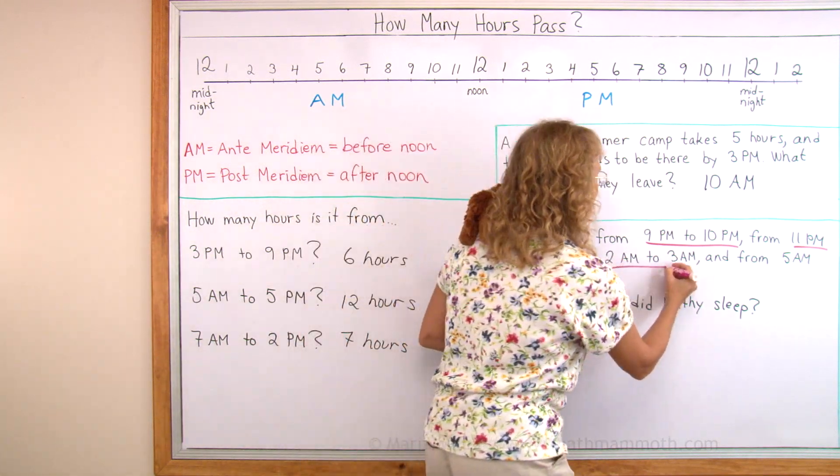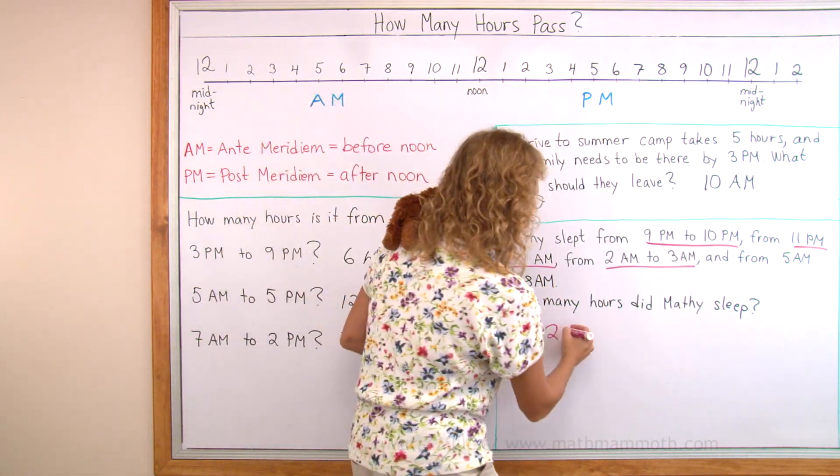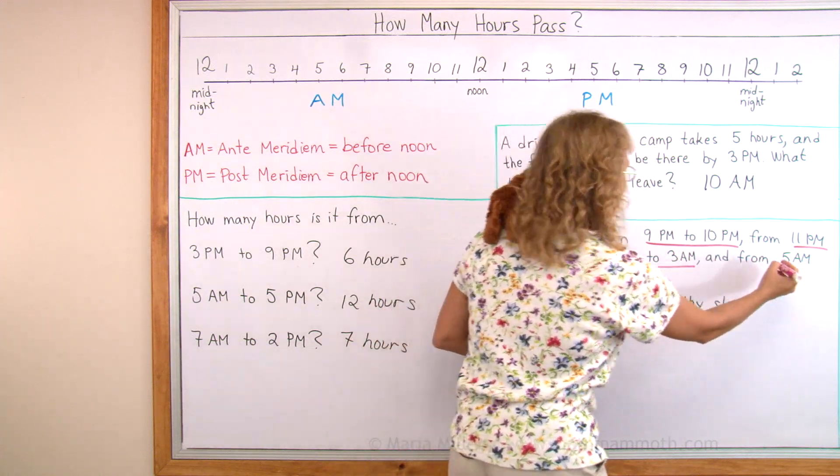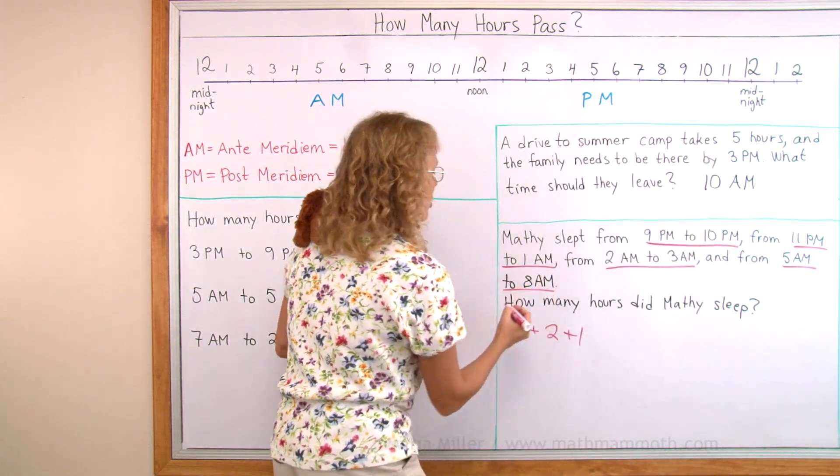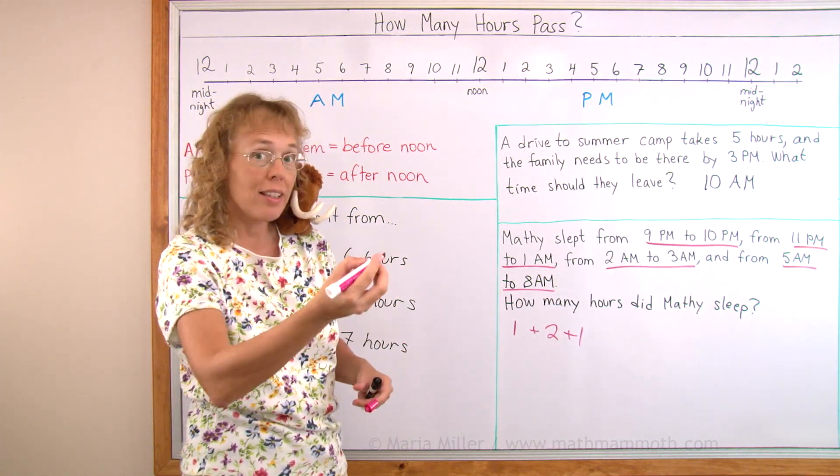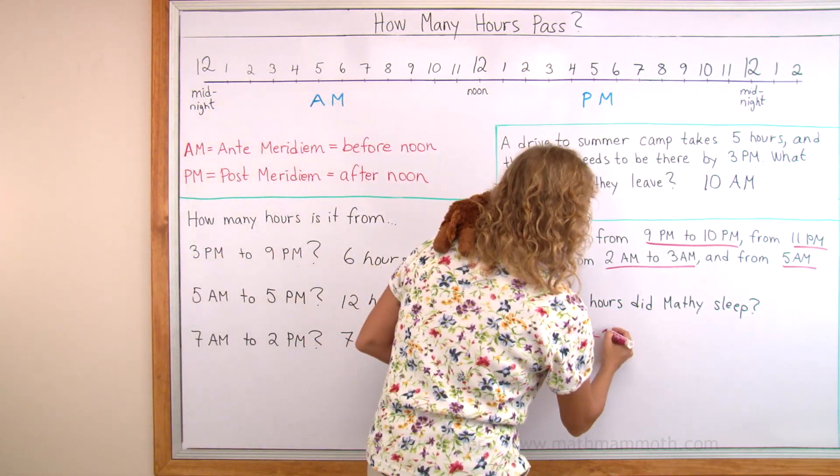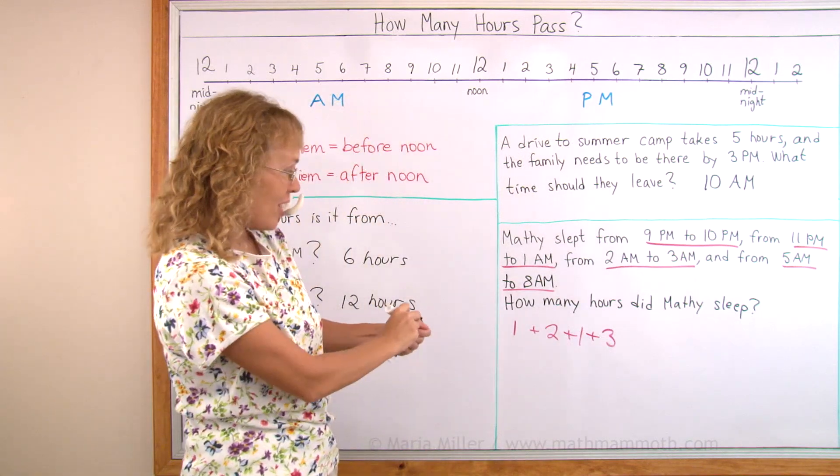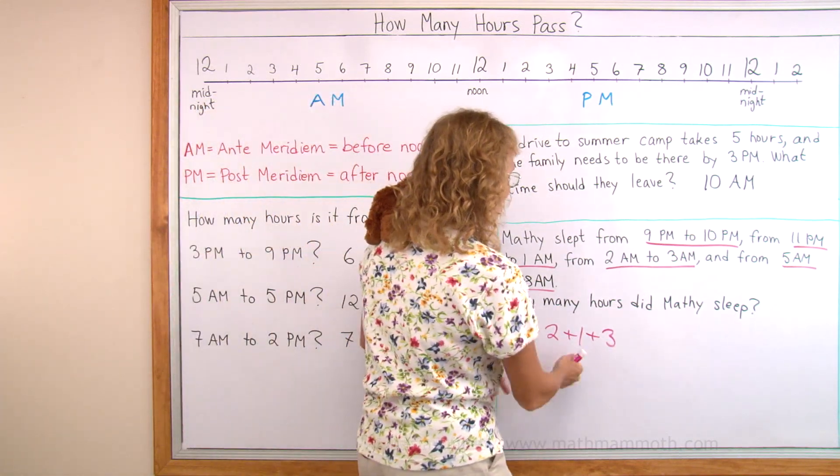From 2 AM to 3 AM. And that's again easy. It's just one hour. And then from 5 AM to 8 AM. That's how many hours? 5 to 8? Three hours. Yeah. So, now I have my addition here. Now it's easy. Three, four, seven hours.